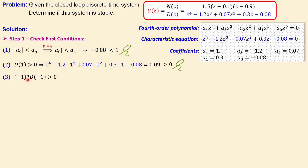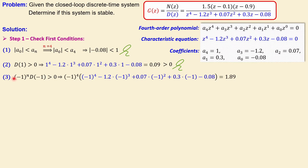The third condition is given by the expression: minus 1 to the power of n, times the characteristic equation evaluated at z equals minus 1, must be larger than zero. With n equals 4, we substitute minus 1 for z and calculate. The result is 1.89, which is also larger than zero. So all three initial conditions are met and we can proceed.